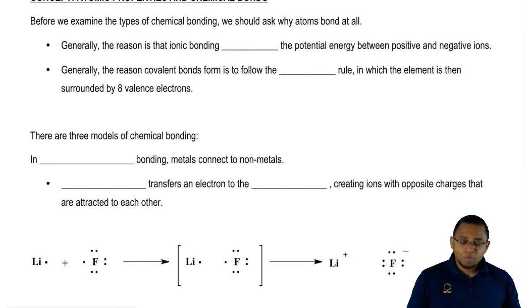Generally, the reason that ionic bonding forms is because it lowers the potential energy between positive and negative ions.